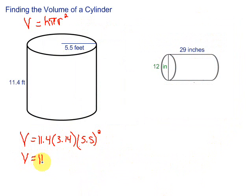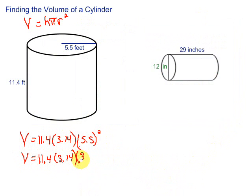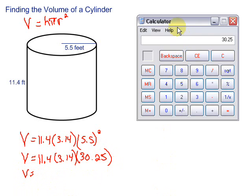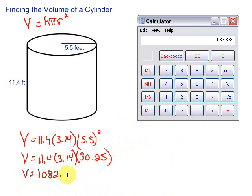I'll rewrite everything here. So we have 11.4 times 3.14 times 30.25. Then we go ahead and multiply all those. So we have 30.25, we're going to multiply that by 3.14 times 11.4, which gives us 1082.829.